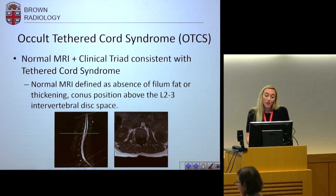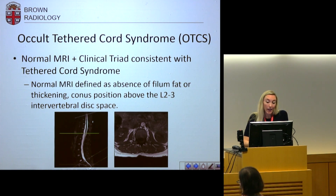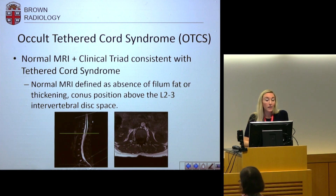However, in occult tethered cord syndrome it's essentially a normal MRI, as shown here — we don't see any of the previously mentioned findings. We defined a normal MRI in our study as the absence of filum fat or thickening, as well as the conus position above the L2-3 interval disc space, although we'll talk about that further. We looked at patients who met the clinical triad as established by Dr. Klinga and her team.